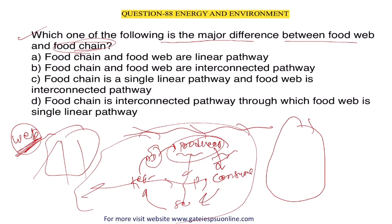A simple food chain is: producer → primary consumer → secondary consumer → tertiary consumer → decomposer → back to producer. When there are interconnected systems with an infinite number of connections, that is a food web. Option C — food chain is a single linear pathway, food web is an interconnected pathway — is the correct answer.